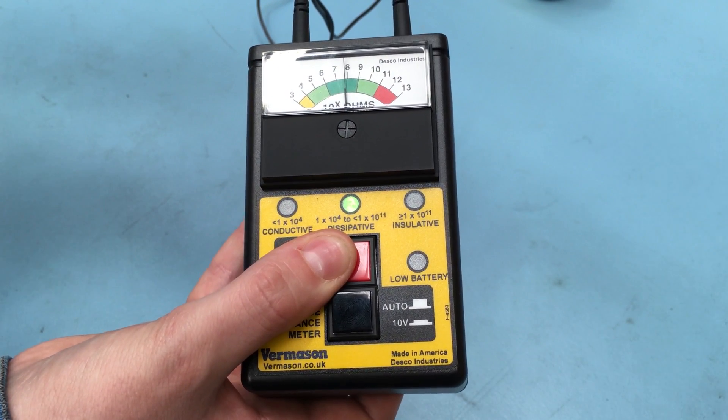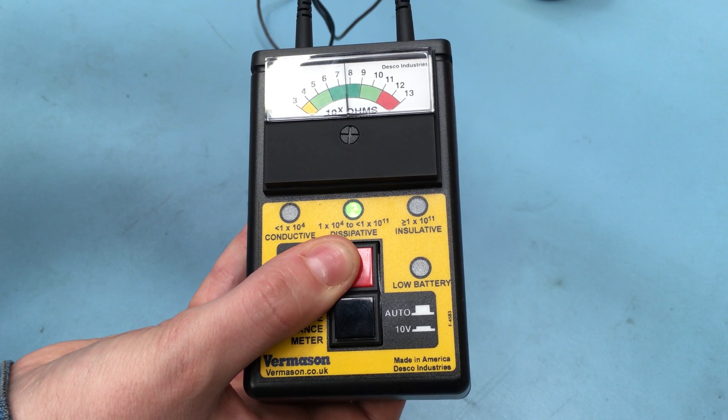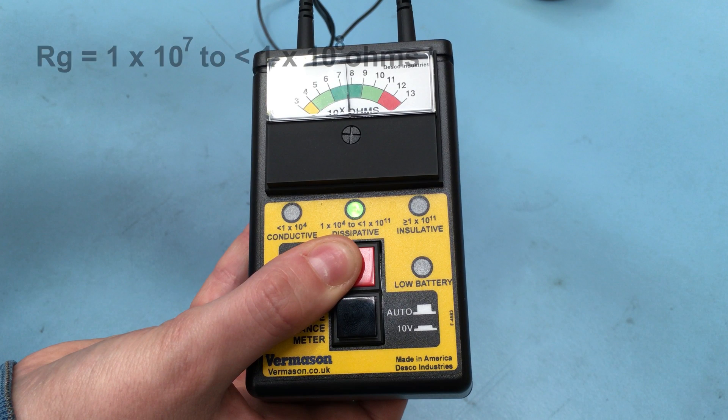In our example, the needle has stopped between 7 and 8. The measurement for resistance to ground is therefore between 1 x 10 to the 7 ohms to less than 1 x 10 to the 8 ohms.